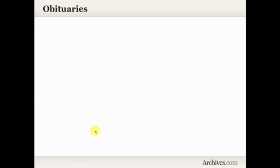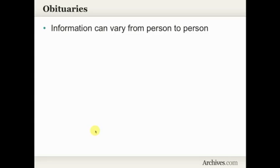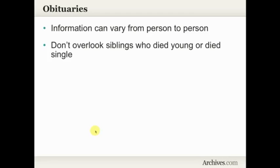I can't stress enough how important it is to find the obituaries of all of the siblings, because the information in an obituary can vary widely from person to person. Don't overlook the siblings who died young or who died single. Sometimes it's tempting to skip over them — how detailed is their obituary going to be? You might be surprised. Look for all of the siblings, including the ones who died young and the ones who died unmarried with no children. Look for their obituaries as well.